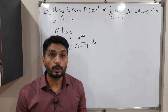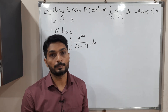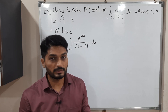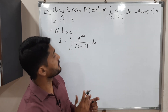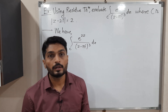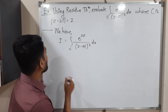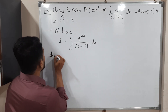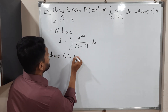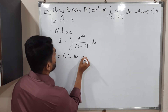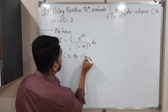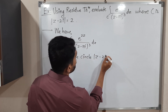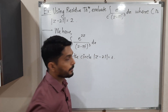The next important thing is the curve C. Let us draw the curve C — it is a circle. Where C is the circle given by |z minus 2i| = 2.